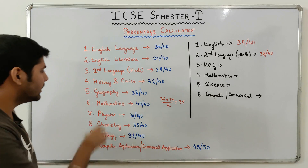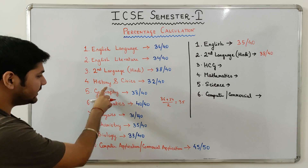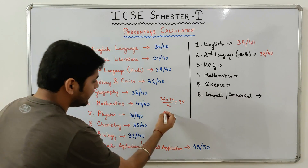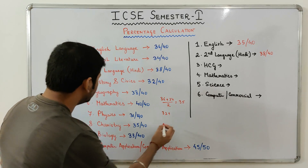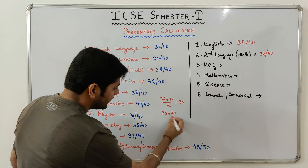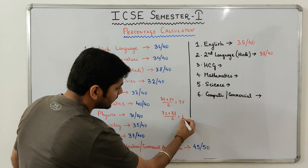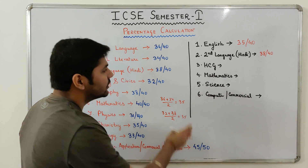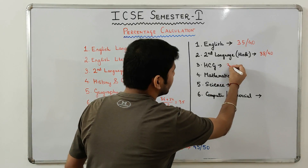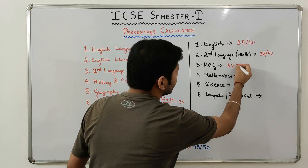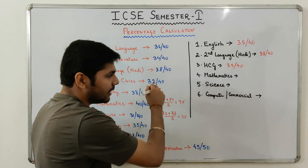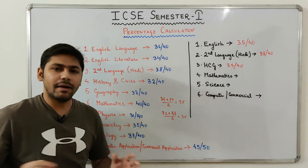Then we come to HCG — History, Civics and Geography — which is the combination of two subjects: History & Civics and Geography. So let's find the average: 32 plus 38 divided by 2 equals 35. So in HCG you have 35 out of 40.